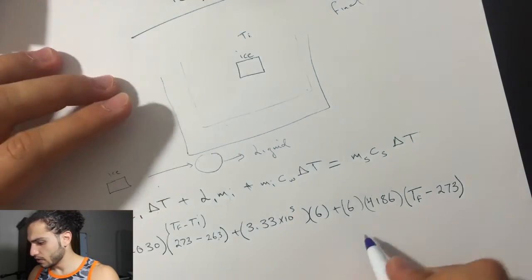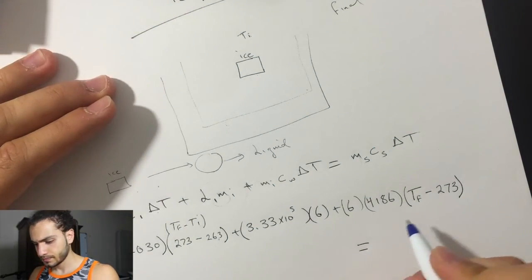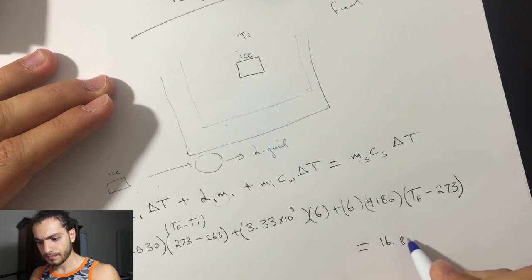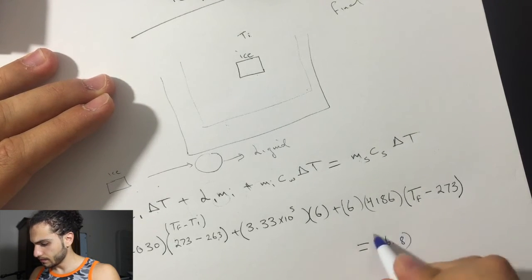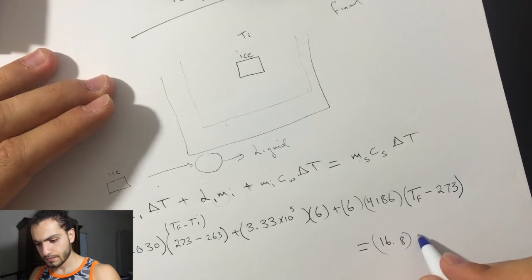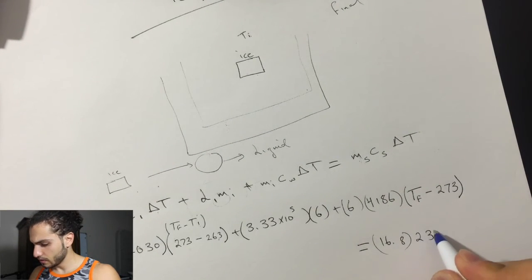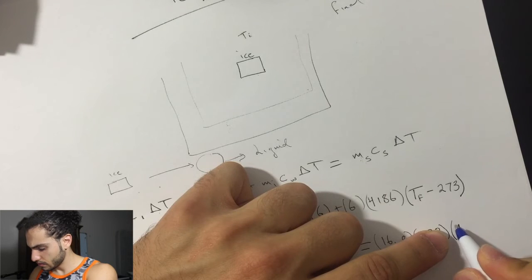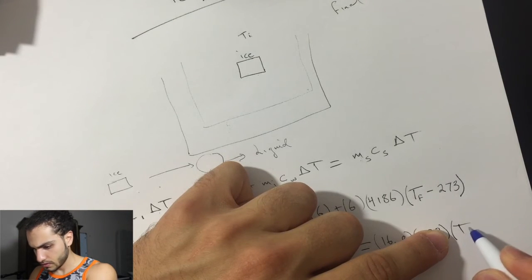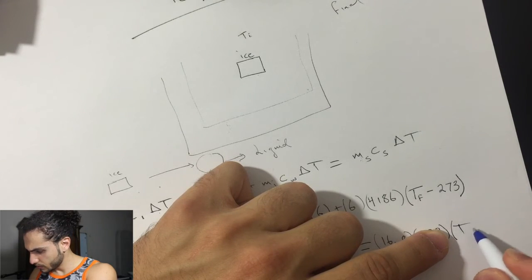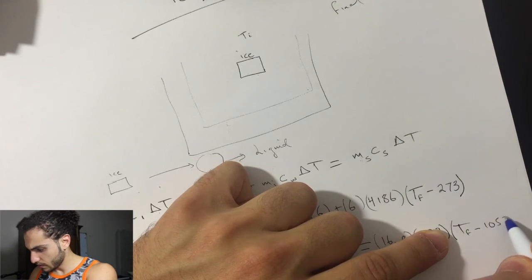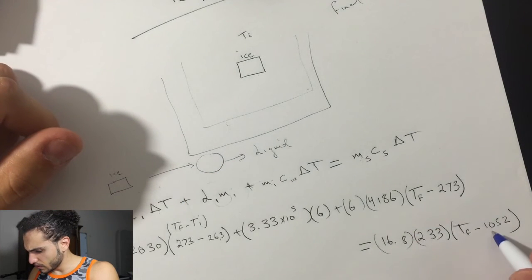And this is going to be equal to the mass of the silver, 16.8. And then, specific heat of the silver. And then, the temperature. Temperature final, minus 1052. I think this one should be here.